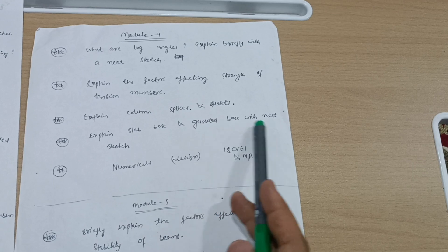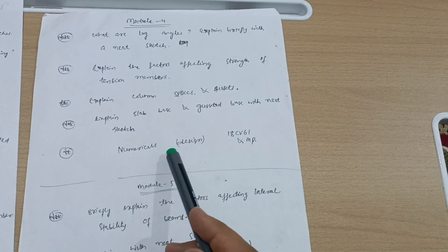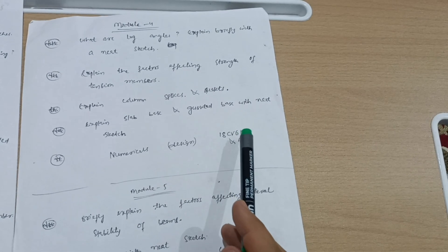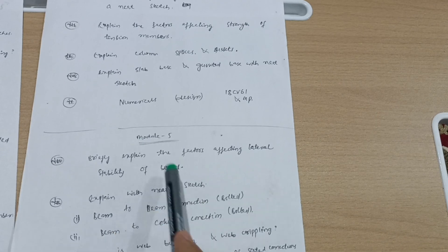Numericals, as usual, design problems. It may be 20 marks question in the fourth part. 18 Civil 61 and model question paper is enough to cover the varieties of numericals.